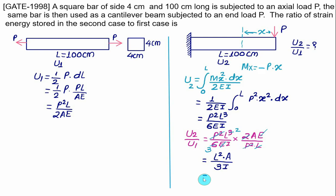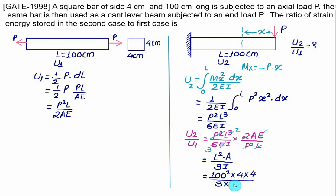With L = 100 cm, area = 16 cm², and I = 4⁴/12 for the square section, substituting into U₂/U₁ = L²A/(3I) gives U₂/U₁ = 100² × 16 × 12 / (3 × 256), which comes out to approximately 2500.